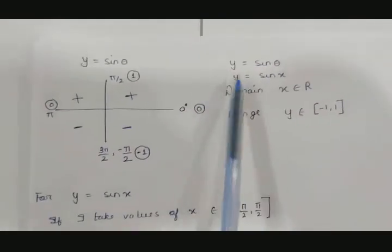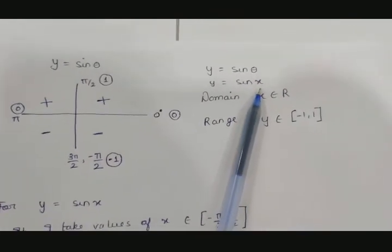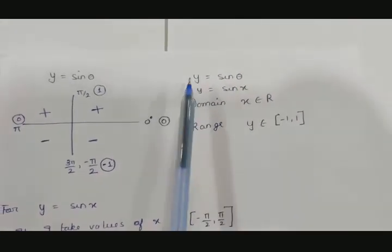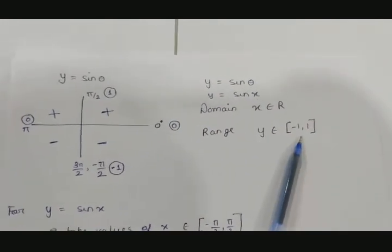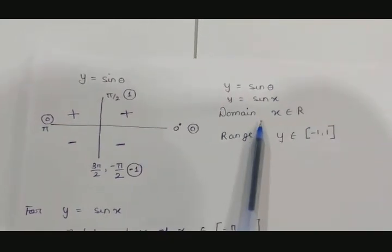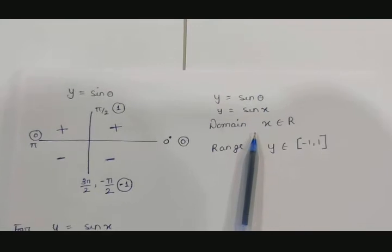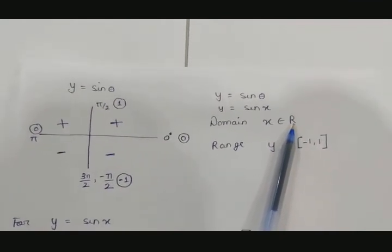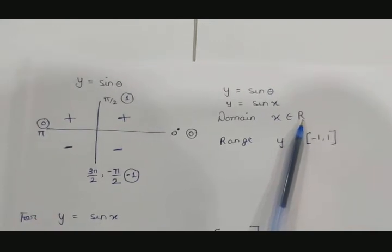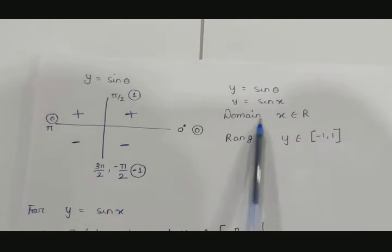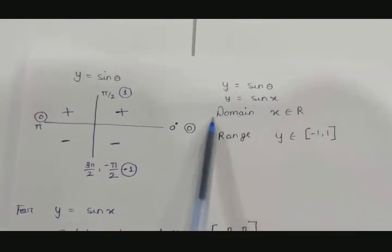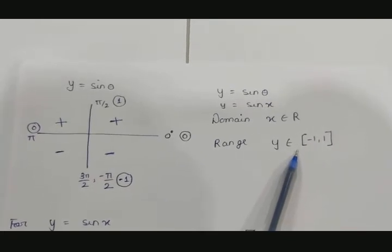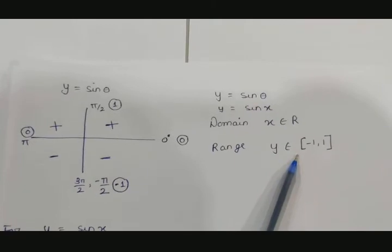For y = sin x, we know x can take any angle, and sin always gives a value between −1 and 1, so y ∈ [−1, 1]. But since x = 60° and x = 120° both give √3/2, it is many-one. So we need to restrict the domain. We restrict it such that the range stays [−1, 1] — because if the range becomes less than [−1, 1], it won't be onto.